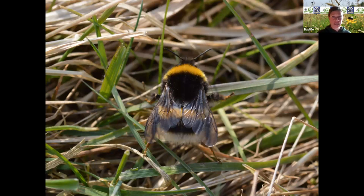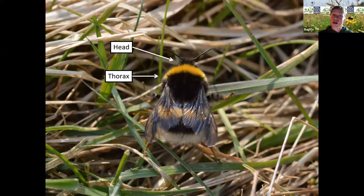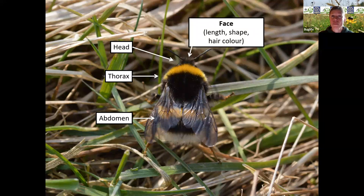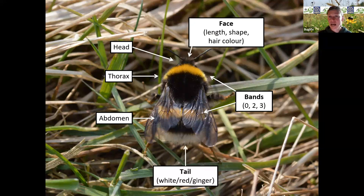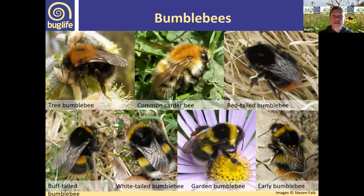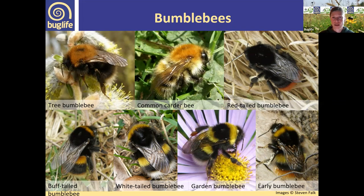To identify bumblebees, we also look at colour of the head, thorax and abdomen, the length and shape of the face, how many bands on the thorax and abdomen, overall colour, and the colour of the tail. These are our seven common bumblebees — these are all queens, which are the easiest to identify. Top left, tree bumblebee: ginger thorax, black abdomen, white tail. Top right, red-tailed bumblebee: all black with a red tail tip.